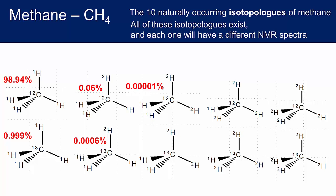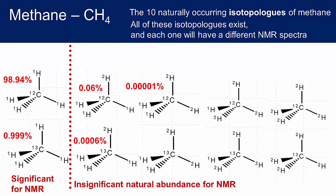For the isotopologue with a carbon-13 atom, the probability is close to 1%. We can calculate the probability for the other isotopologues, but the rarity of the deuterium isotope makes their abundance much, much less. For our NMR experiment, most of the signal will come from the most abundant species, so from a practical perspective we can ignore all the deuterium-containing molecules.